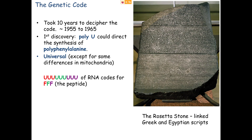The genetic code deciphered after those ten years is nearly universal. There are some differences — mitochondria differ from what we call the universal code, and different bacteria have their own codes. For the most part, mammals and other animals all use the same codes except in mitochondria, which are more like bacterial codes. Some yeast have specific codes too. But the most common one from our point of view, for animals, we call the universal code.